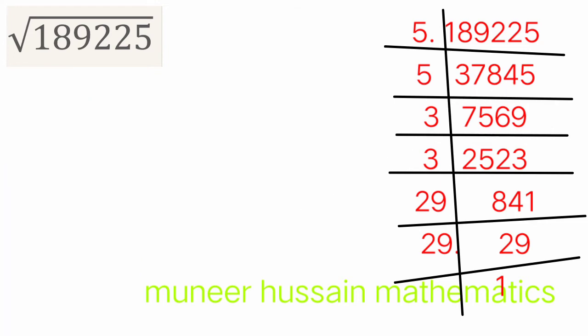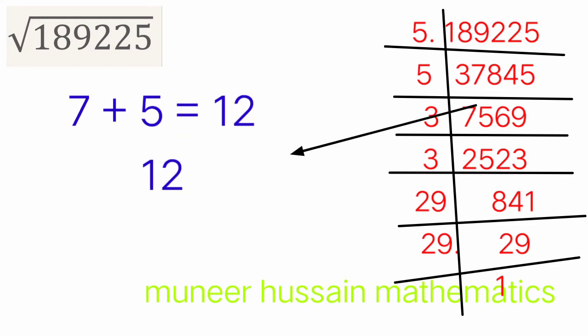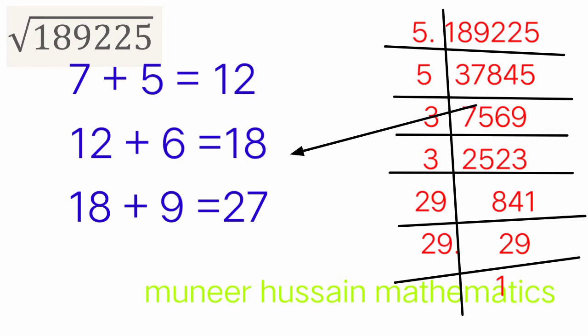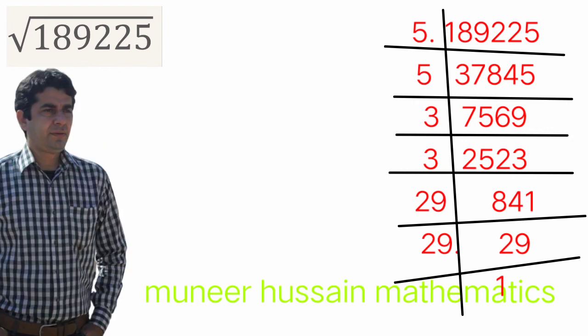The unit digit is now 9, so it is not divisible by 5. To check divisibility by 3, we add all the digits: 7 + 5 + 6 + 9 = 27. Since 27 is divisible by 3, the four-digit number 7569 is also divisible by 3.